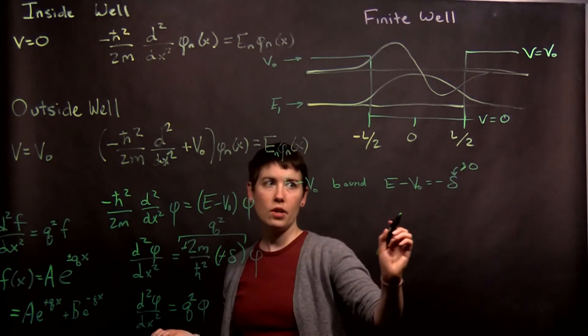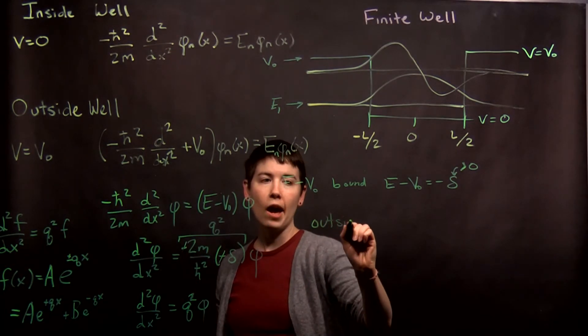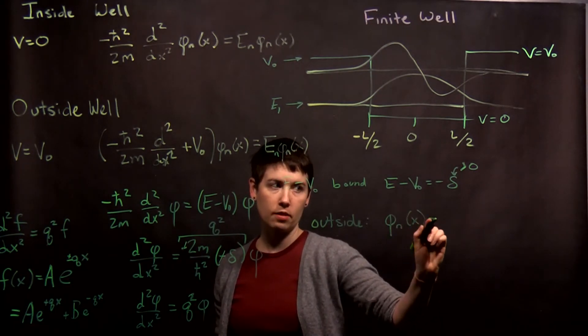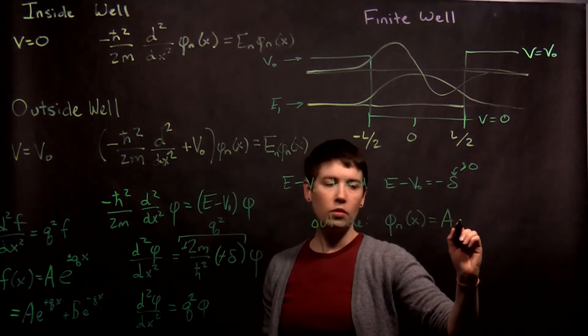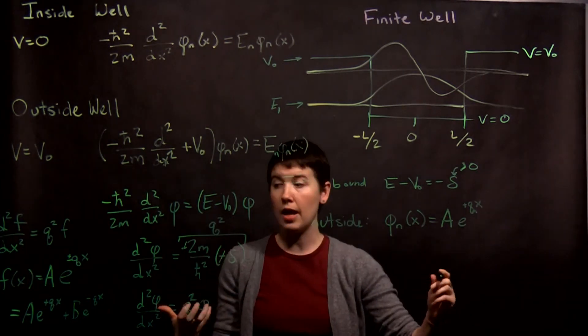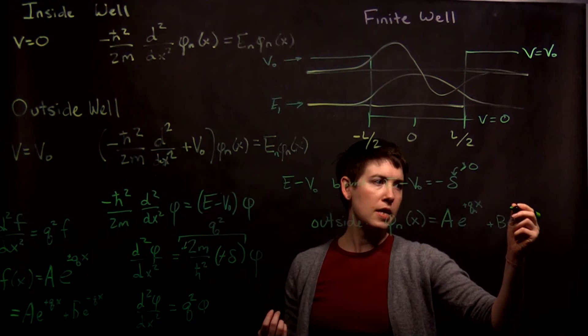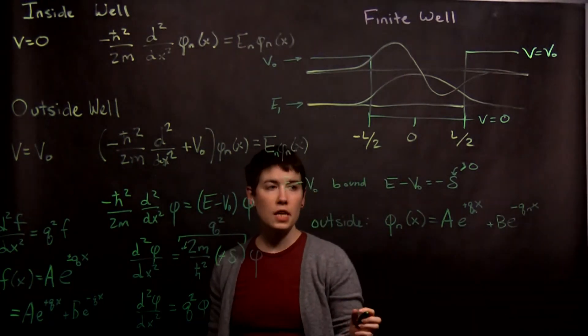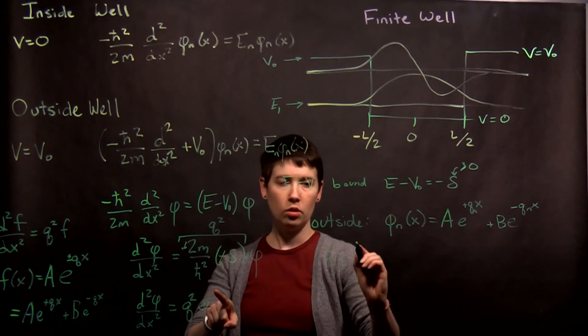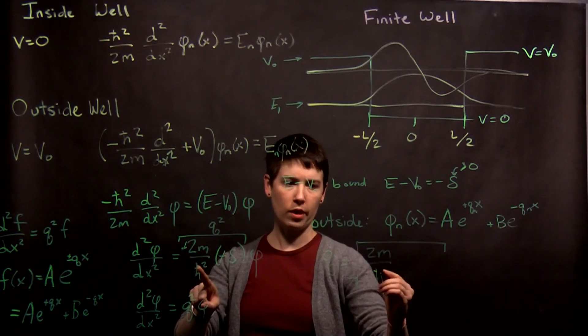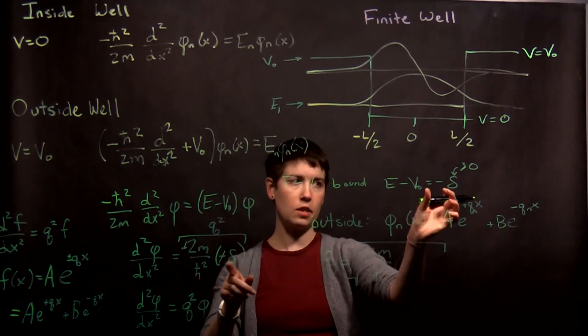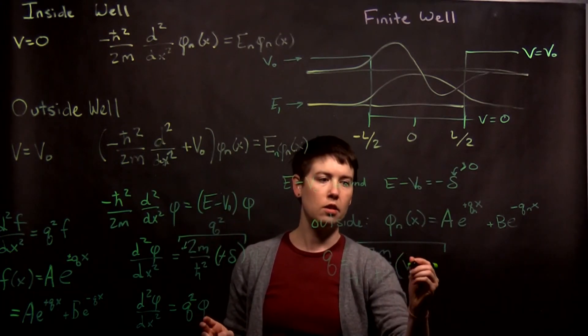So now we can take this and what we can say is outside the well, we have now found that our phi of n is going to be equal to Ae to the positive qx, and I'm going to put a little n there, because these q are going to relate to what our n is, plus Be to the minus qₙx. So the key is that we also know what q is actually. So q is going to be equal to the square root of 2m over h-bar squared, and then we had that delta. But remember that delta, or negative delta, so negative delta was this, so delta is just the inverse of that, is V₀ minus E.